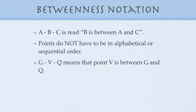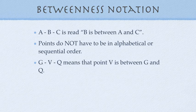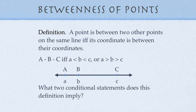Here's some betweenness notation. When we write A hyphen B hyphen C, and the uppercase letters again name places, then we read that B is between A and C. We don't read it A, B, C. We read it B is between A and C. Now, when you're talking about betweenness, then points do not have to be in alphabetical order or in sequential order. For instance, G hyphen V hyphen Q, which you wouldn't read that way. You'd read V is between G and Q. And it means that point V is between G and Q.